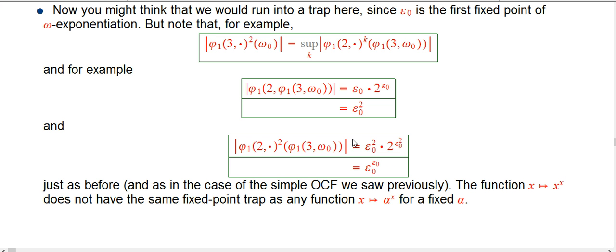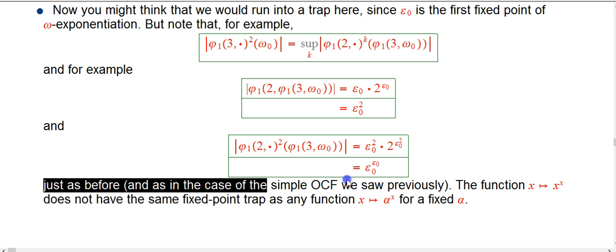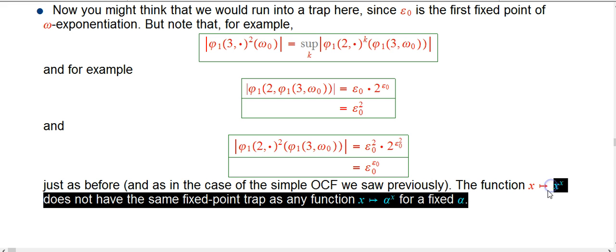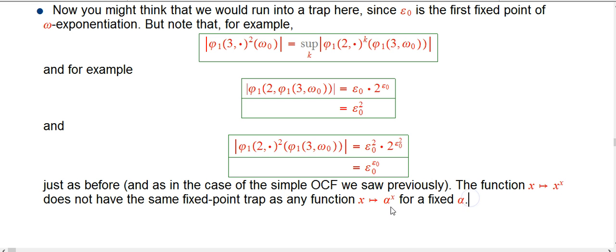We've seen that before — we used this as one of the primary tools in the Buchholz-style OCF in the last ten videos or so. This has much less of a fixed point trap than exponentiation with a fixed base. This is x to the x instead of taking a fixed alpha like omega naught or even epsilon naught and using that as a fixed base for an exponential function. So in fact, that's really okay — it's gonna keep getting bigger when we do that.